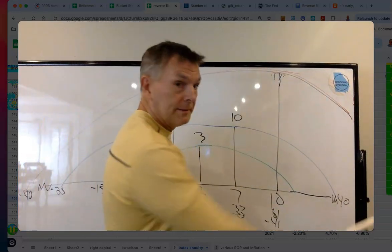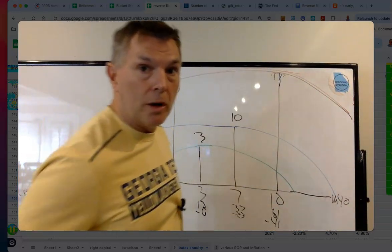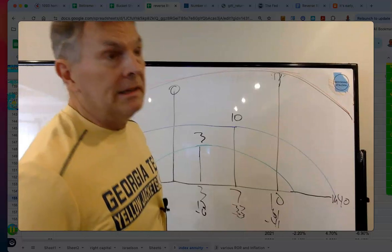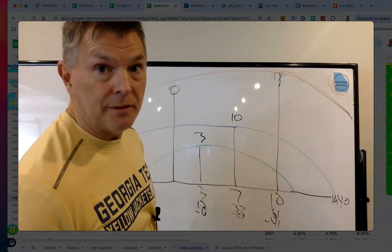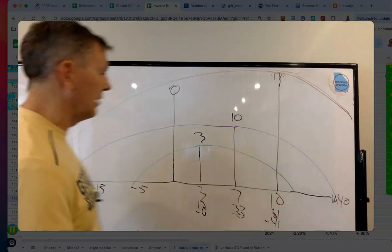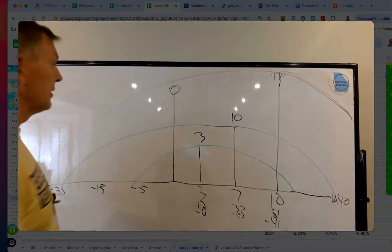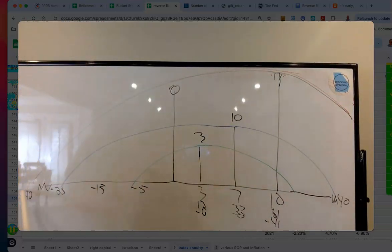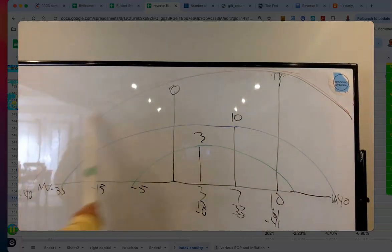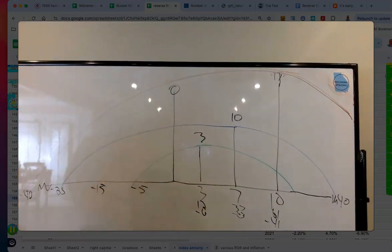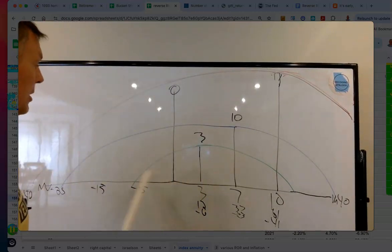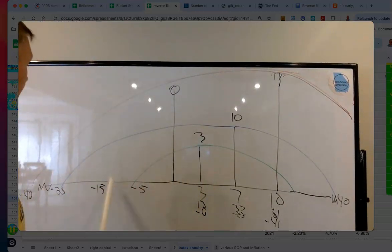On the upside, we've had years up 50% or more — 1933 was up around 55% — so 61% on the upside is in the range of historical experience. Look how wide this bell curve is relative to the conservative portfolio: a very wide shot group.